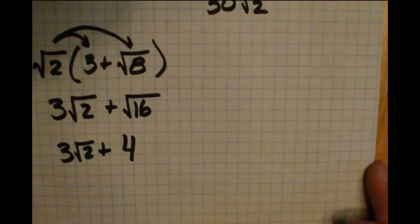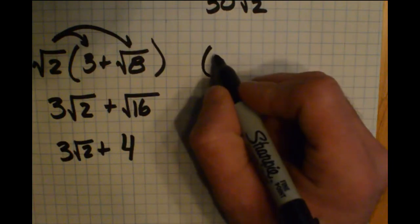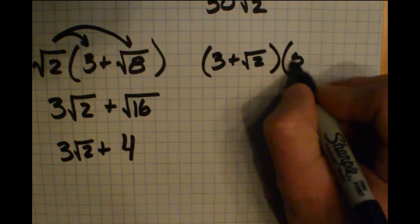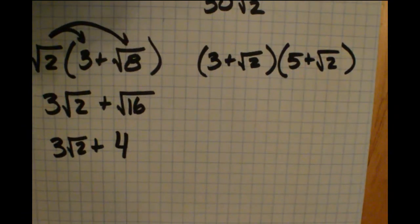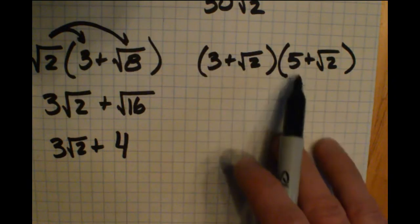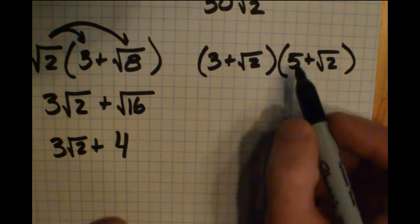Let's take a look at one other example where we're multiplying binomials together. Say we have 3 plus radical 2 times 5 plus radical 2. In class, we learned a few different ways to multiply binomials like this: distributing, using the box or Punnett square method, and the vertical method. Anything that works for you will work here as well.